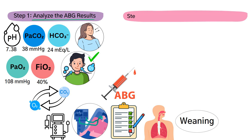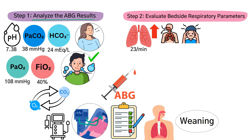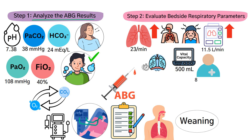Step 2 is to evaluate the bedside respiratory parameters. A spontaneous rate of 23 breaths per minute is elevated and may suggest increased work of breathing or anxiety. A minute ventilation of 11.5 liters per minute is higher than expected, consistent with rapid, shallow breathing. A vital capacity of 500 milliliters is normal, but on the lower end of the normal range for an 80-kilogram patient.